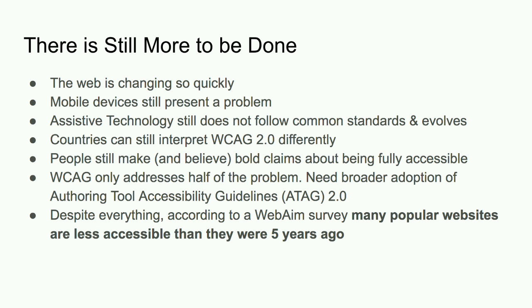People interpret WCAG differently. There are guidelines that are fairly clearly written, but there are different ways they're interpreted in different spaces. The U.S. will have to determine how they're going to look at adopting this, especially when it comes to lawsuits. One of the other challenges is how people claim their websites are accessible — both the claims web developers make and the claims organizations make about the accessibility of their sites.